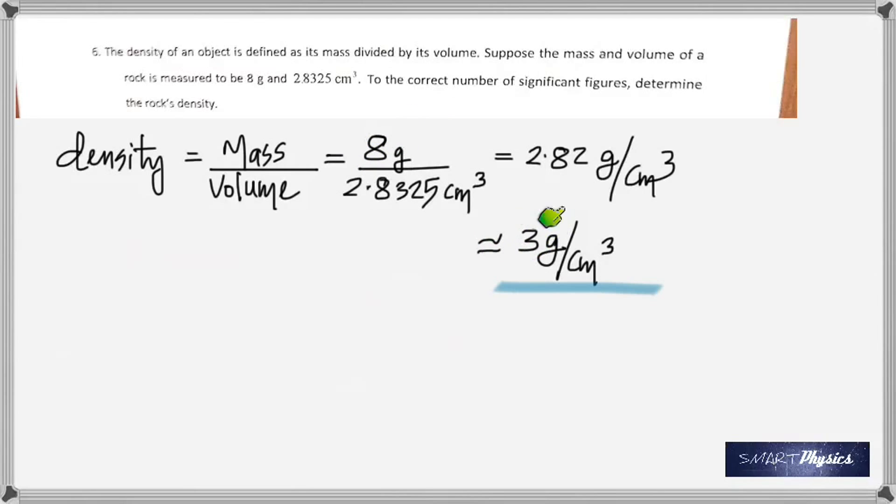Which is approximately 3 gram per centimeter cube. We are only using one significant figure in the result. Because, you always go with the lowest number of significant figures, which is 1 in this term. So, the answer can only have as many significant figures as in the lowest one of the terms. So, it's 1 here. So, the answer cannot have more than one significant figure.